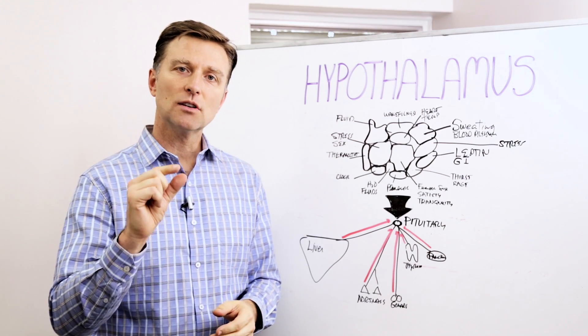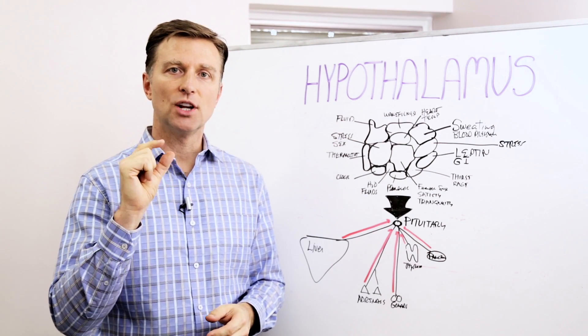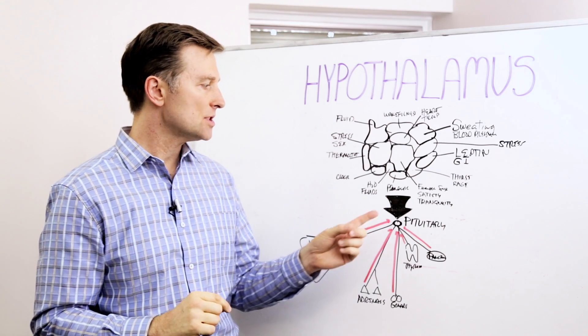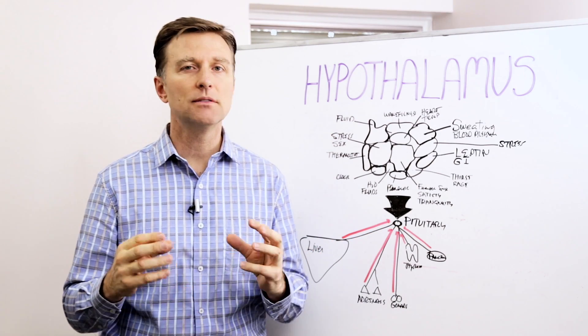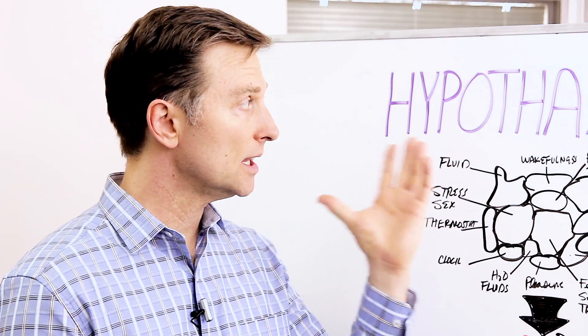It's up in the brain. It's this little gland that is the size of an almond. And then the pituitary is the size of a pea. So they're very, very small. But let's start with the hypothalamus.